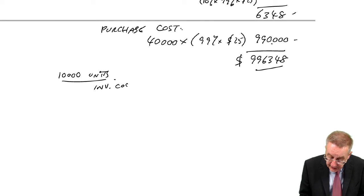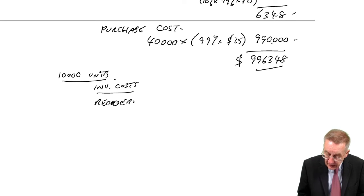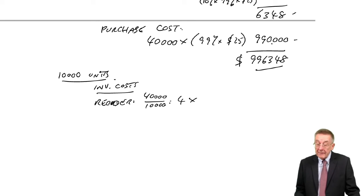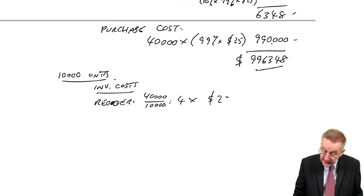First of all, the inventory costs. The reorder cost. 40,000 a year, 10,000 each time, so four orders each time. At $20 an order, it's $80.